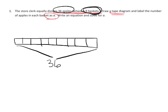And the question is, draw a tape diagram and label the number of apples in each basket as A. So they want us to know how many apples are in one basket, and we're going to label that with the letter A. So right here, this is your classic tape diagram. There may be other ways to draw it, but this is probably the one that is most common for this kind of problem.